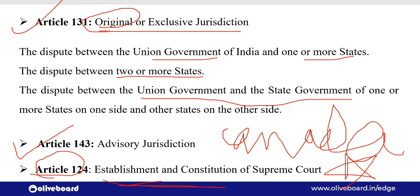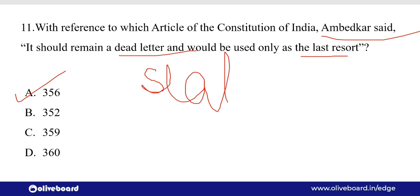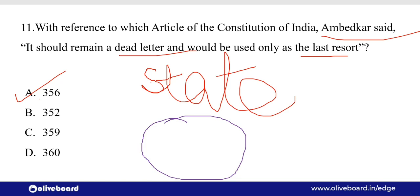With reference to which article of the Constitution of India, Ambedkar said it should remain a dead letter and would be used only as the last resort? यानि कि यह वाला article तभी use होना चाहिए जब और कोई चारा ना बचा हो — तो यह article है Article 356, यानि कि जो state में emergency लगाई जाती है, President Rule लगाया जाता है। ऐसा इसलिए कहा गया क्योंकि यदि President Rule लगता है तो वहाँ की democratically चुनी गई सरकार को हटाया जाता है — लोगों की इच्छा को नहीं माना जाता। Article 356 है State Emergency के लिए।